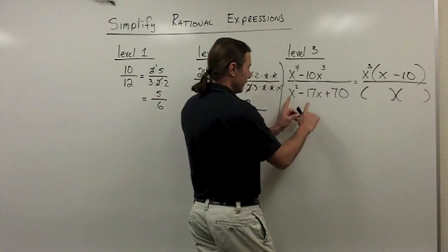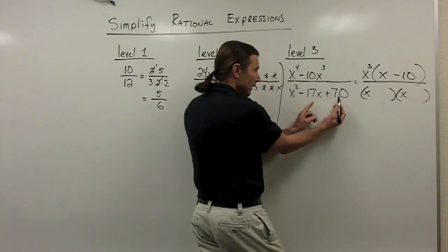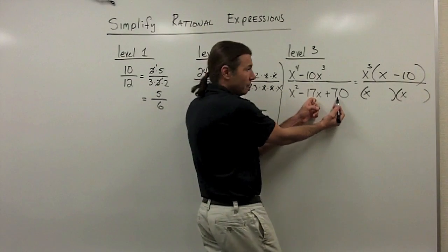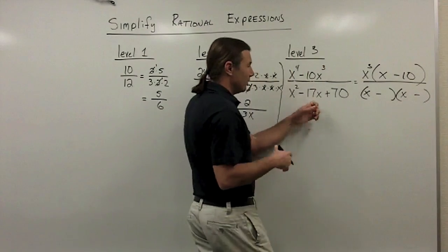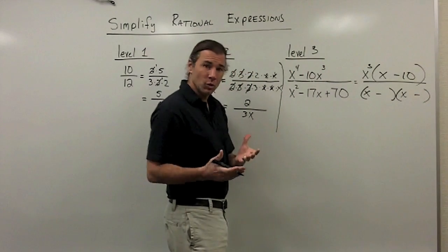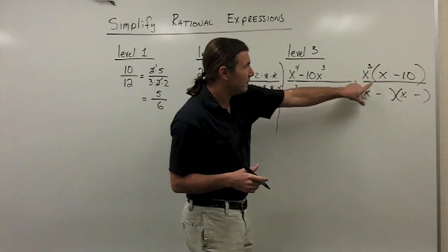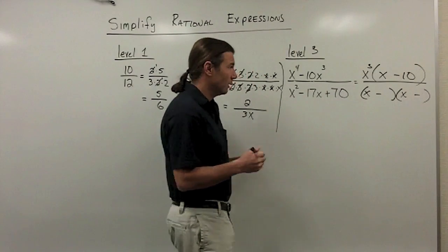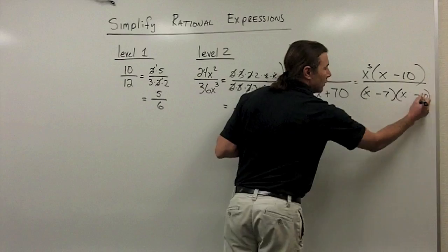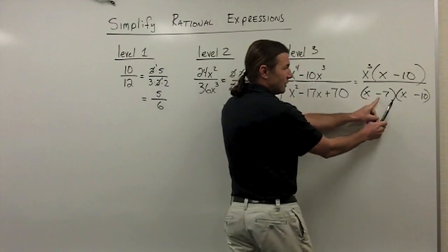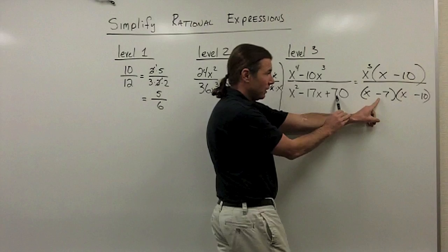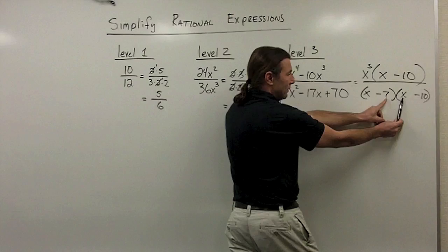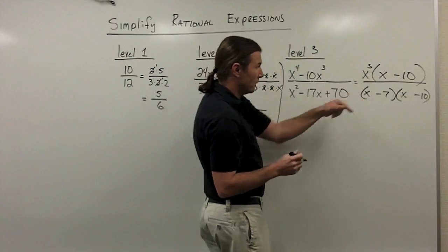For the trinomial in the denominator: x squared means I need an x and an x. The last term is positive, which tells me I need either both negative or both positive. Since the middle term is negative, I'm going to go negative, negative. I'm thinking factors of 70: 35 times 2, or 10 times 7. Notice I have an x minus 10 up in the numerator, so that gives me a clue for factoring. I'll try 7 and 10. Negative 7 times negative 10 gives me positive 70. The outsides give negative 10x, the insides give negative 7x, which adds to negative 17x. So that is the correct factoring.